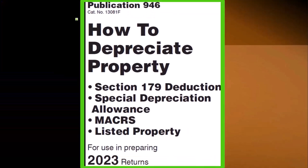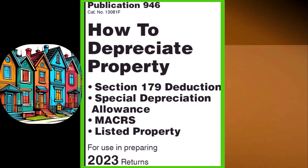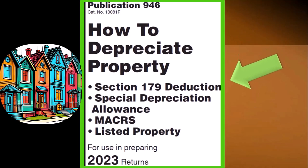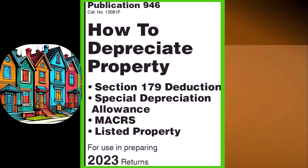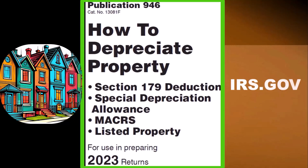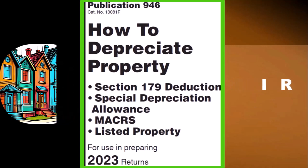Most of this information can be found in Publication 946, How to Depreciate Property. Topics include: Section 179 Deduction, Special Depreciation Allowance, Listed Property, and more for Tax Year 2023, which you can find on the IRS website at irs.gov.